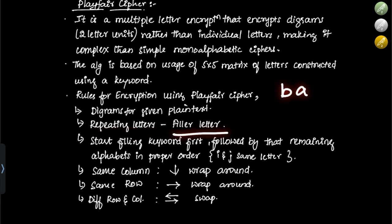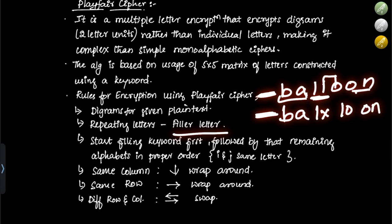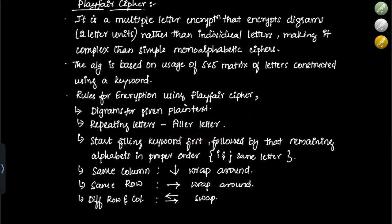For example, if the plain text is BALLOON, when clubbing into pairs: BA is fine, but LL is repeating. In that case, write L X, then take L O, and N can be written accordingly with a filler.